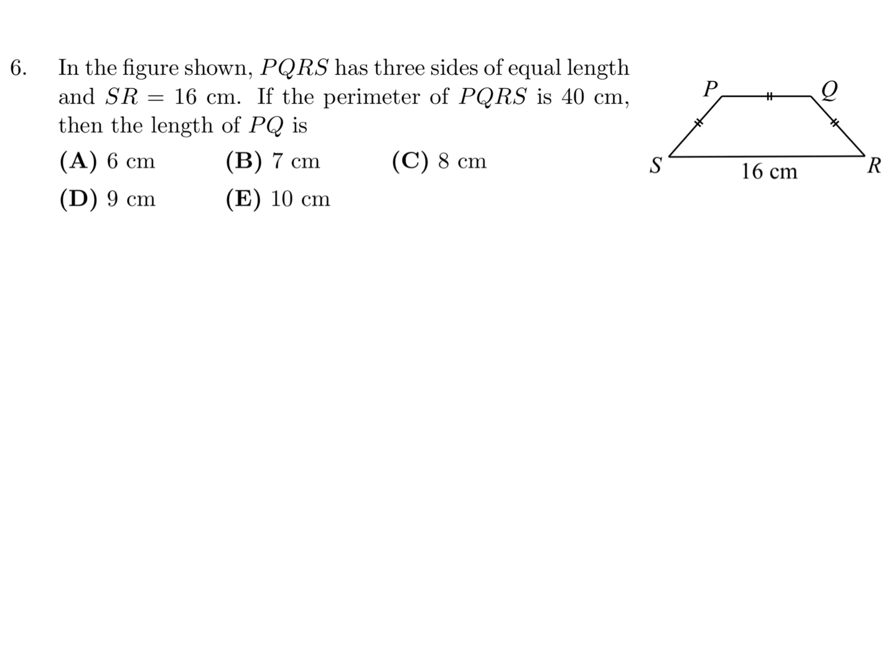In the figure shown, PQRS has three sides of equal length, and SR is 16. If the perimeter of PQRS is 40, what is the length of PQ? Okay, so I will let these guys be X, since they're all equal. That's what this symbol means. And that's, of course, 16.